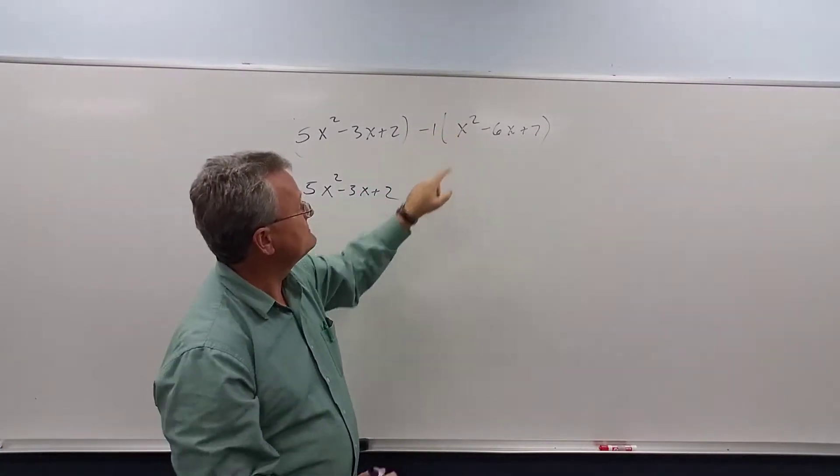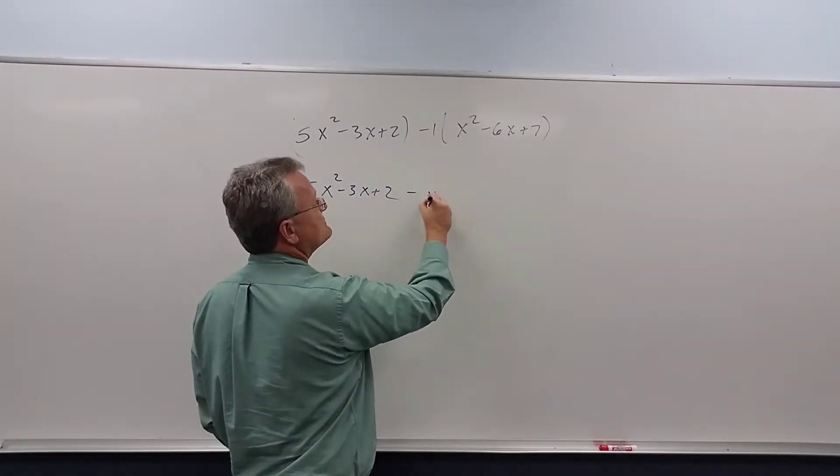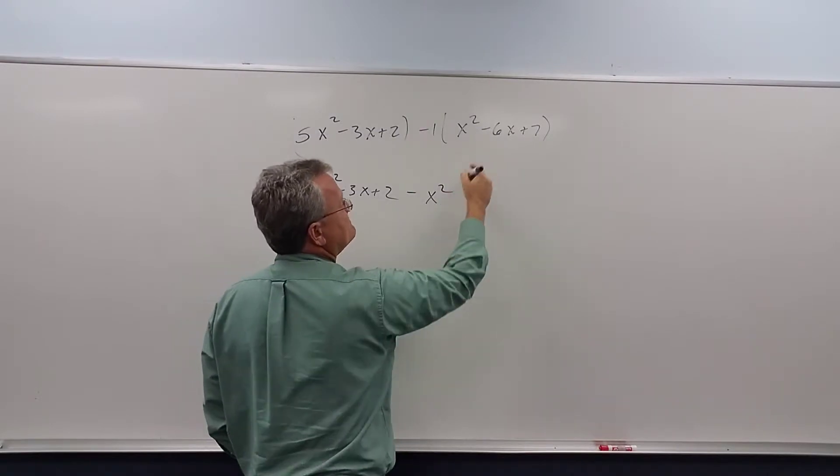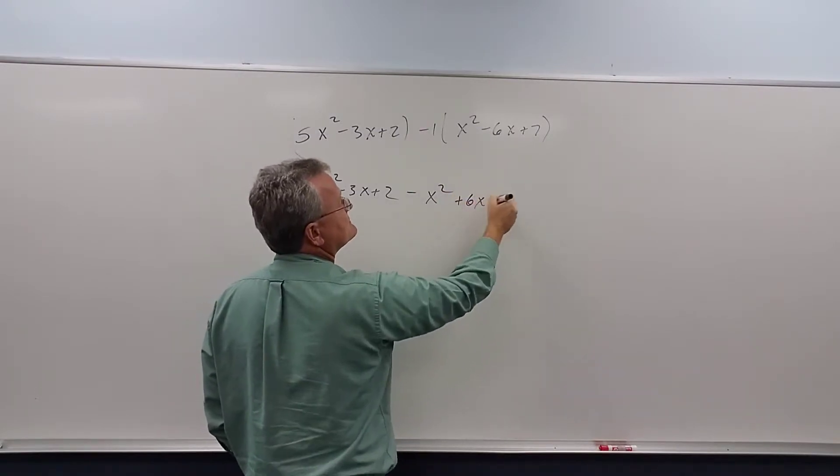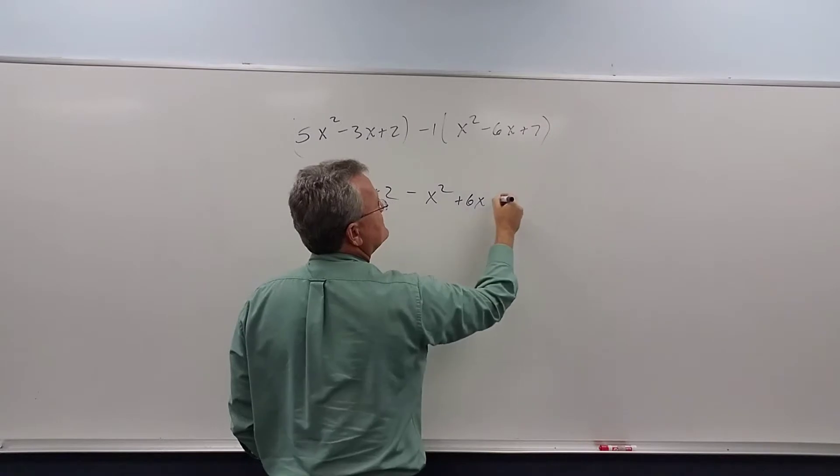A negative times a positive gives us a negative x squared. This becomes a positive 6x, and this becomes a negative 7.